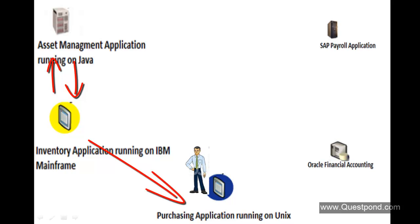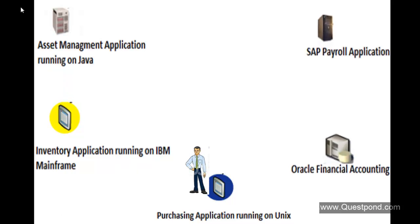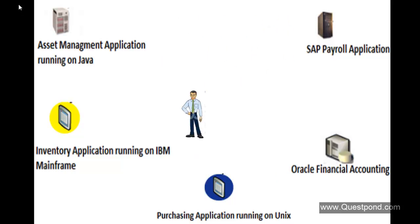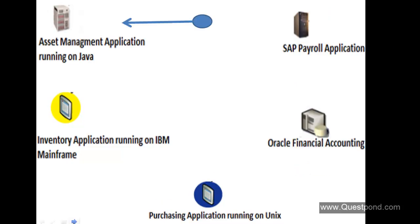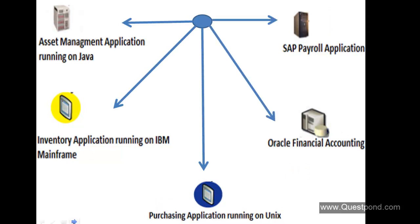Definitely I would hunt for a product which would automate my business process. The other two applications this organization uses are the Oracle Financial Accounting application and the SAP Payroll application. Oracle Financial Accounting manages the financial data. SAP Payroll manages the employee data and payroll details. The Asset Management, Inventory, Purchasing, and Oracle Financial Accounting applications are all somewhere dependent on the SAP Payroll application for employee data information, such as employee name or designation. Also, the Oracle Financial Accounting application is dependent on the Purchasing application for finding out purchase orders done for the financial year, the amount spent, etc.